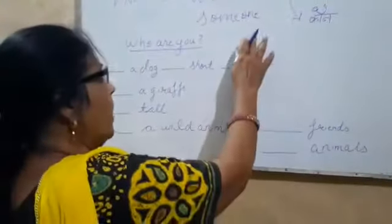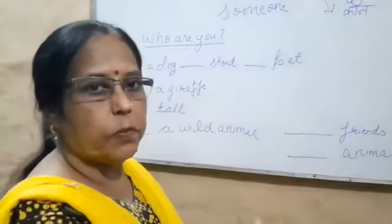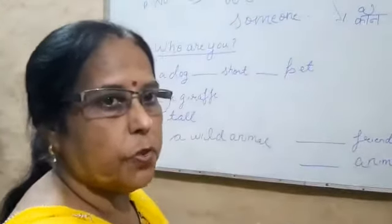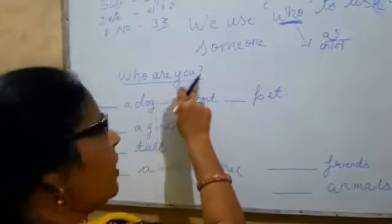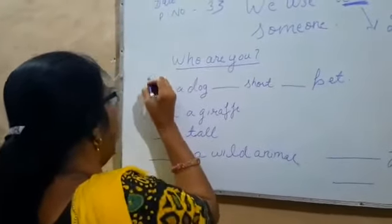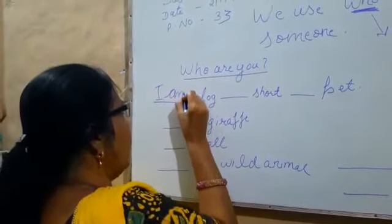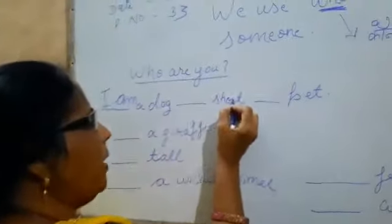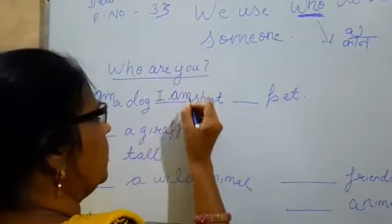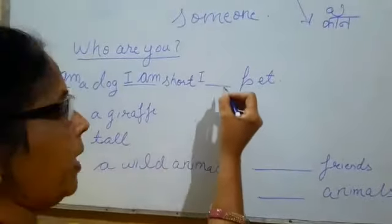अब यहाँ पे दो figures हैं — dog है और giraffe है। आप लोग अपने book में देख रहे होंगे। उसमें जिराफ जो है, वो dog से पूछ रहा है: who are you? तुम कौन हो? तो dog बोल रहा है: I am a dog. यहाँ पे आपको लिखना है — I am a dog, I am short, I am a pet.